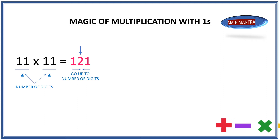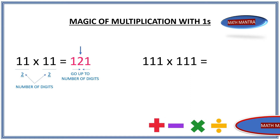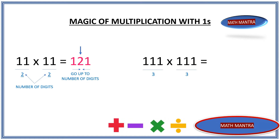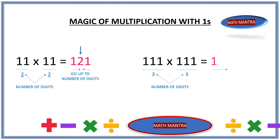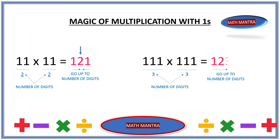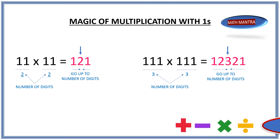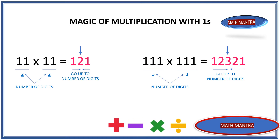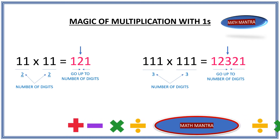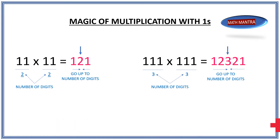Let's apply the same pattern to 111 times 111. In this case the number of digits is 3. We start again with 1, go all the way to the number of digits which is 3, and come back down to 1: so 1, 2, 3, 2, 1. Starting from the right, that's 5 digits — a 10,000-range number — so it's 12,321.